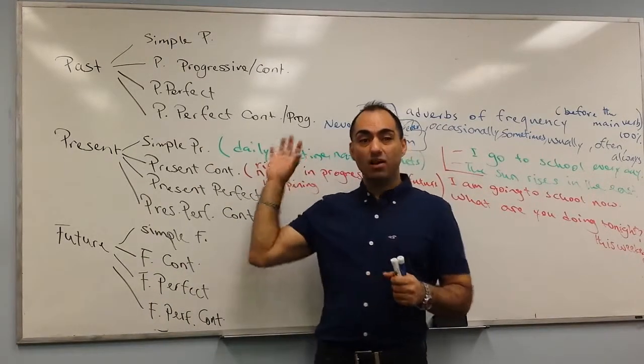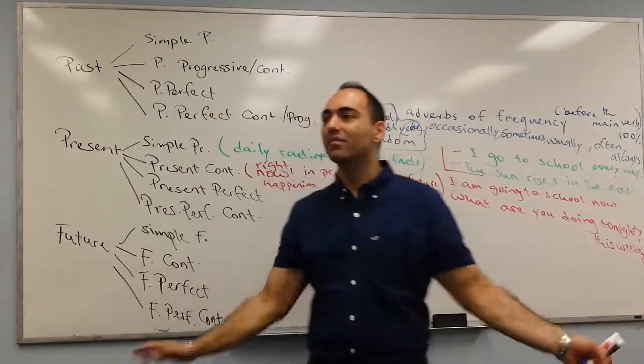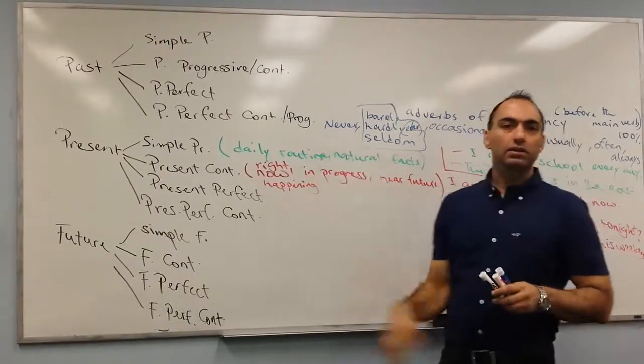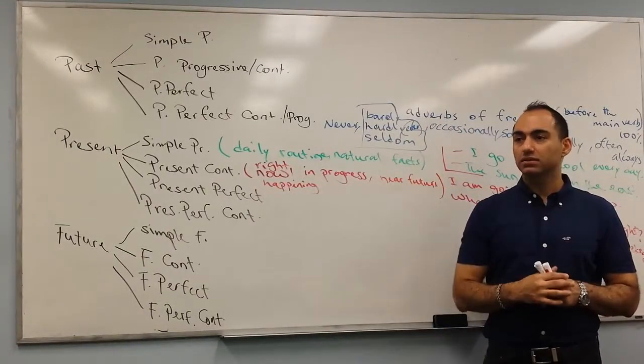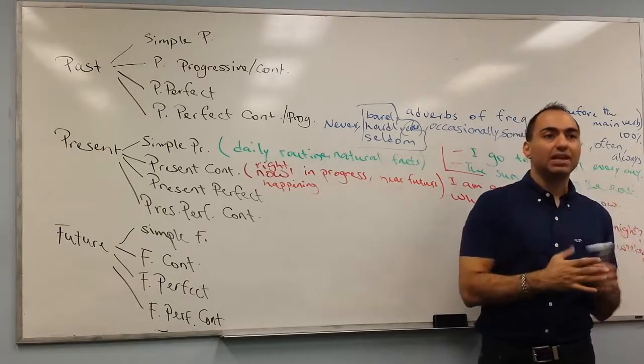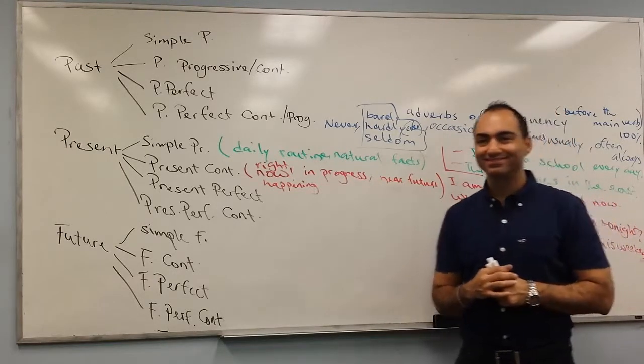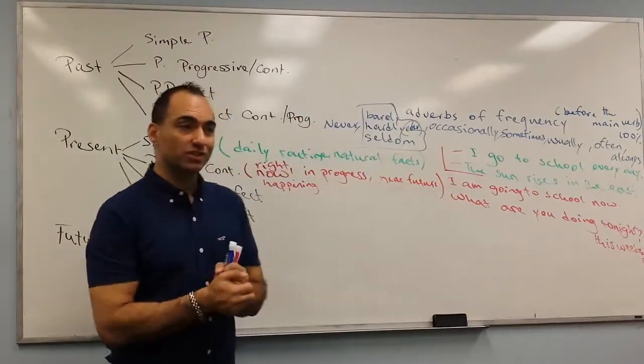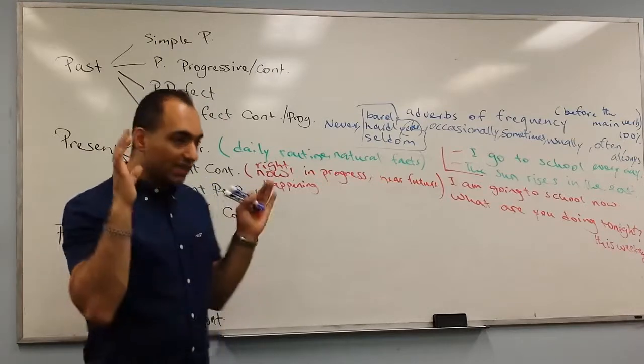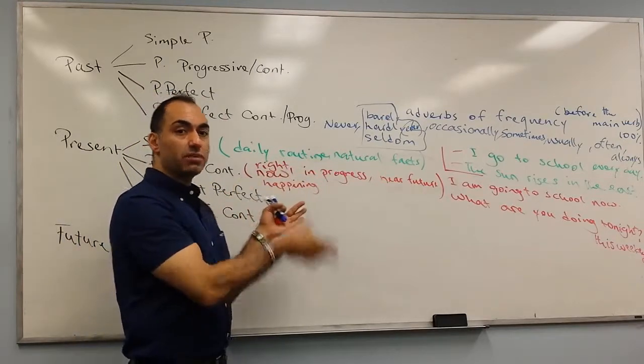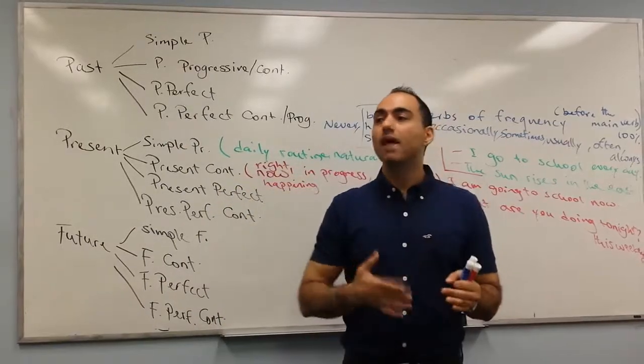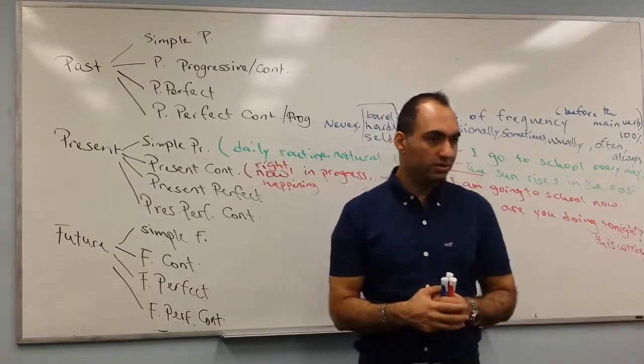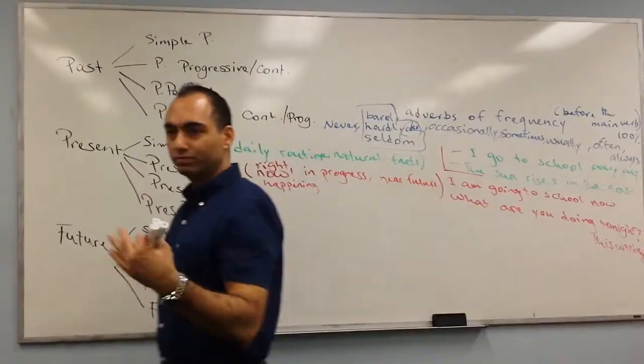So these are usually before the main verb. It's not that they can never happen anywhere else. For example, instead of saying I never drink coffee, if I put it at the beginning I should say never do I drink coffee. It changes the structure of the sentence to question form - to call it inversion. Not important now, but just keep that in mind. If you ever put some of them in a different position, they may change the structure of your sentence. Never do I drink coffee. Rarely do I. Hardly ever do I go fishing.